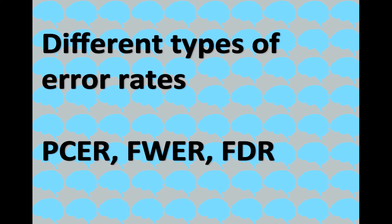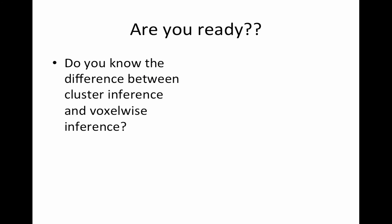Just as you have to choose if you're going to use peaks, clusters, or voxels, you also have to choose the type of error rate you're going to control. SPM outputs all of them, and it's not acceptable to just look and pick the best-looking one — you have to make that decision ahead of time.